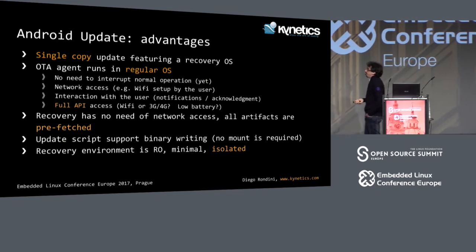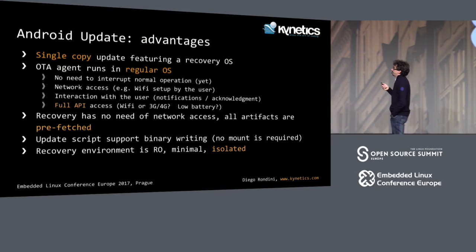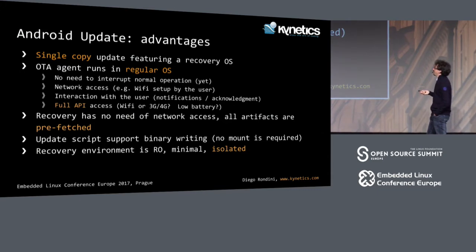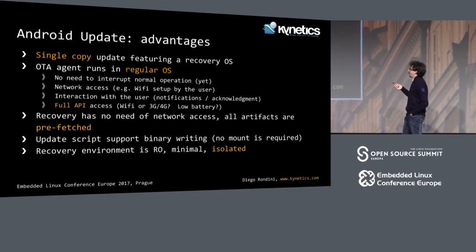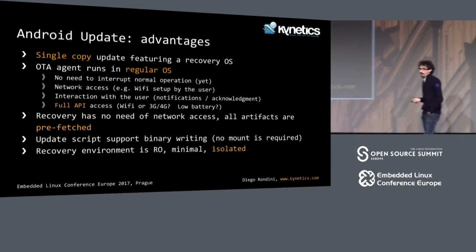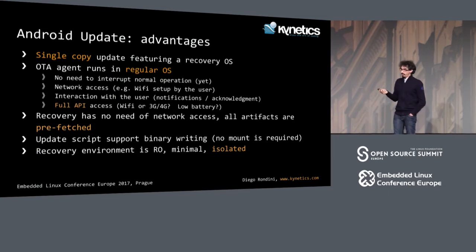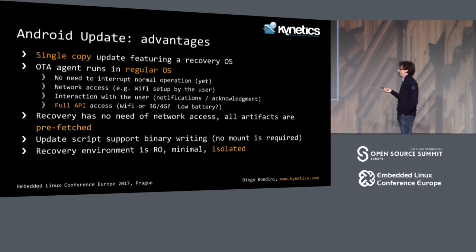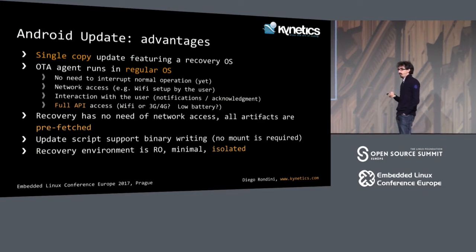What is good about this approach is that the recovery system is very small, and you can still run in the main OS. You can have Wi-Fi configured by the user, and you can access the APIs to check if the battery is low or the kind of connection you are using, so you can decide whether to actually download the update file or not. The other good point is that the recovery system has no need to access the network, so it can be very minimal, read-only, and isolated, because everything is prepared before applying the update.